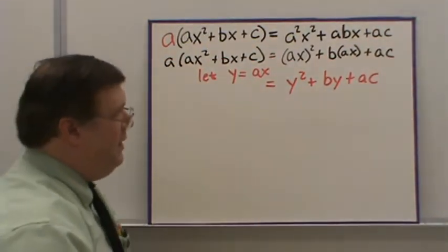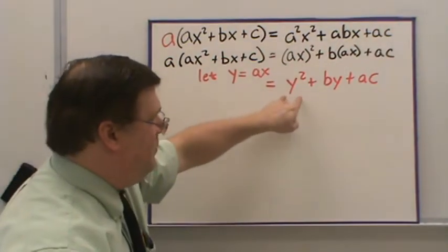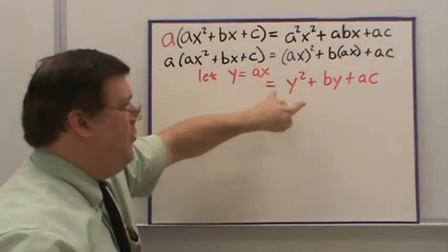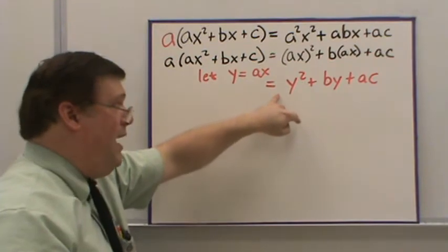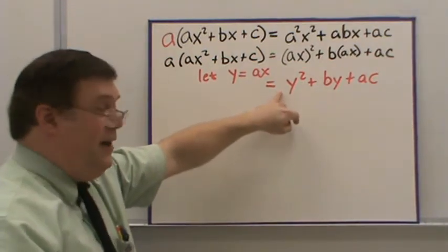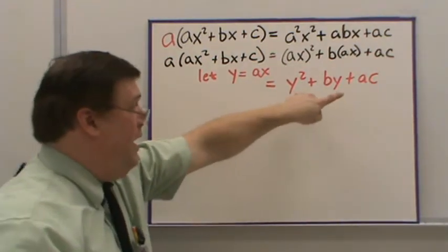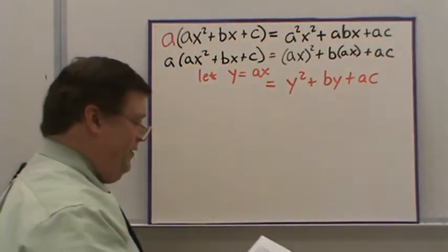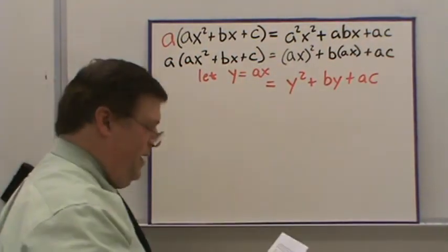Why did I do that? Well, by replacing that AX with a Y, I now have it in the form where I've got a quadratic with a coefficient of 1 in front that I can factor by just finding the factors of AC that add up to give me B.